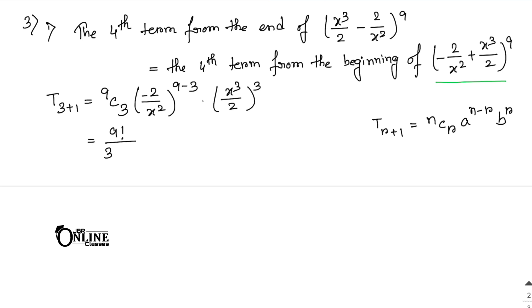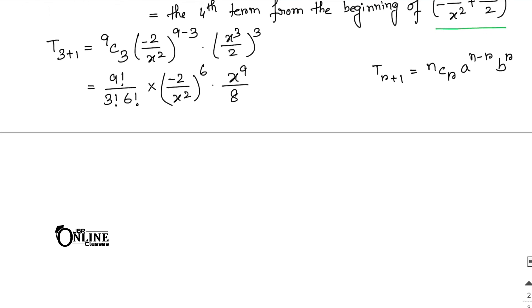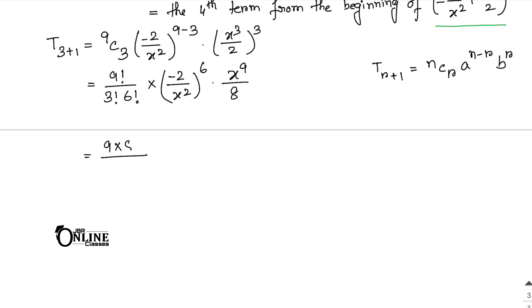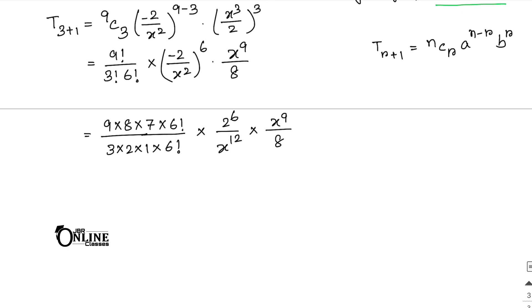T4 = 9C3 · (−2/x²)^6 · (x³/2)^3. 9C3 = 9!/(3! · 6!) = 84. (−2/x²)^6 = 2^6/x^12, and (x³/2)^3 = x^9/2^3 = x^9/8.